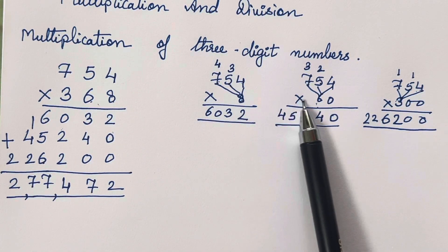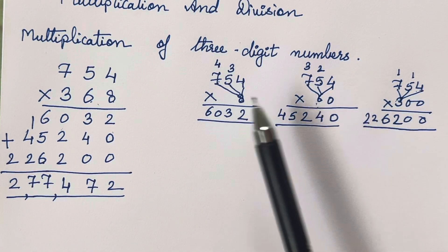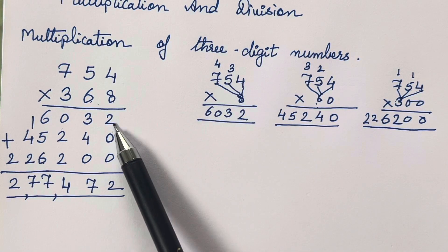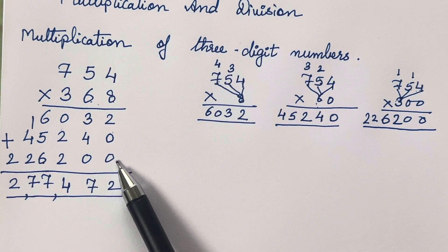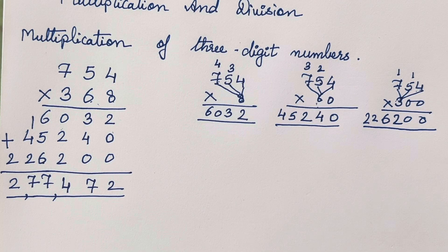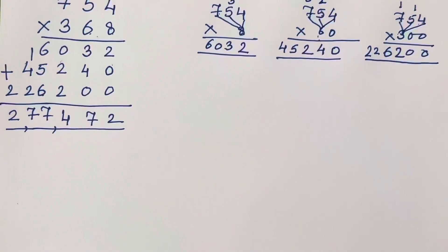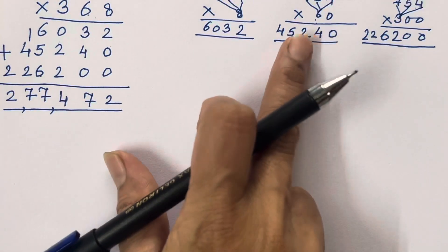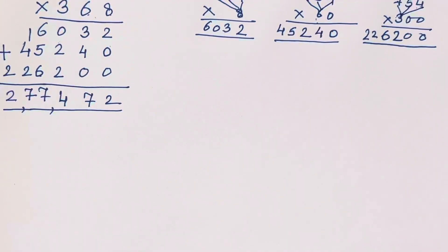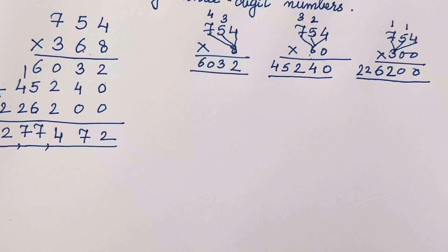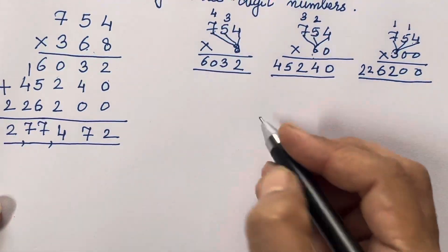We have done separate multiplications and then wrote all the numbers and added them. Now what we can do is multiply this without doing all these separate steps — the same answer is going to come. I will show it over here. This is the short form.